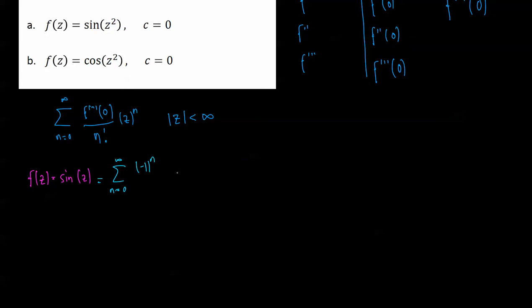Negative one to the power of n, so that will oscillate the plus, minus, plus, minus terms. Then it's z to the power of 2n plus 1, so that gives us odd powers on 2n plus 1 factorial.